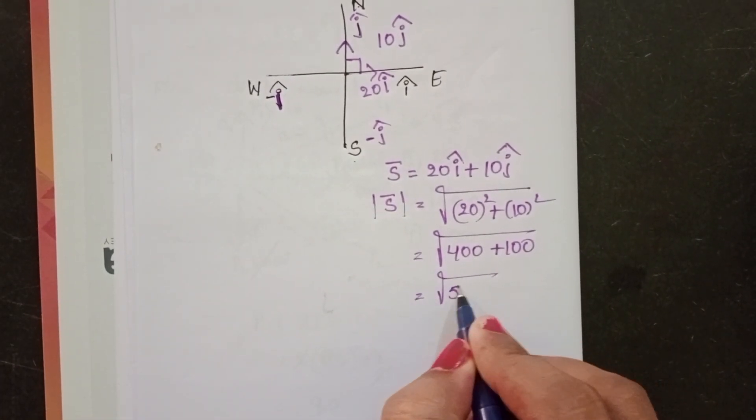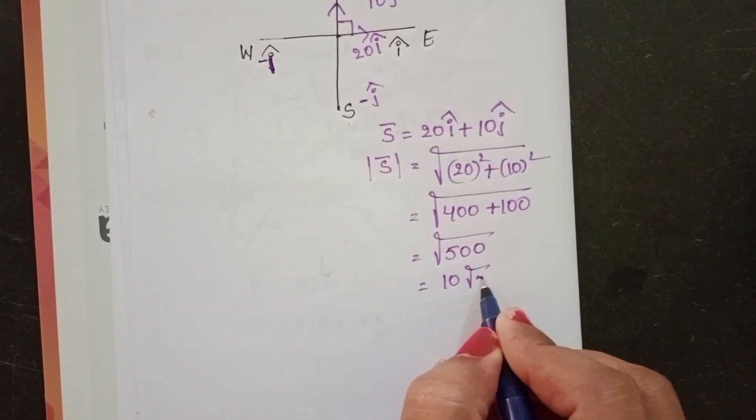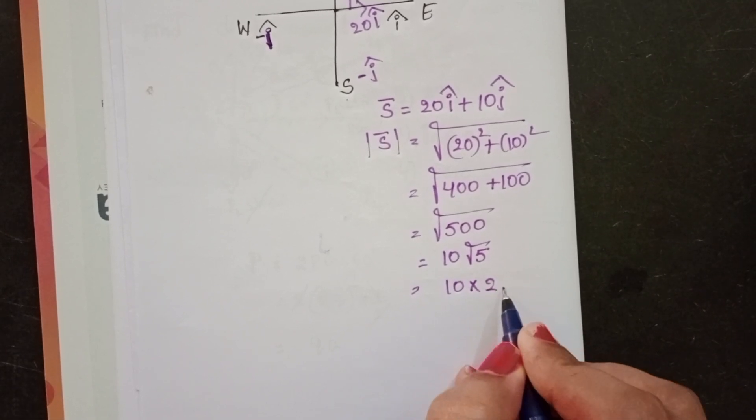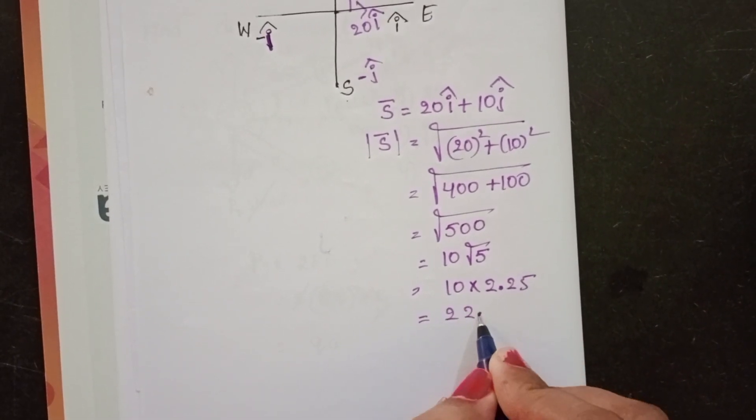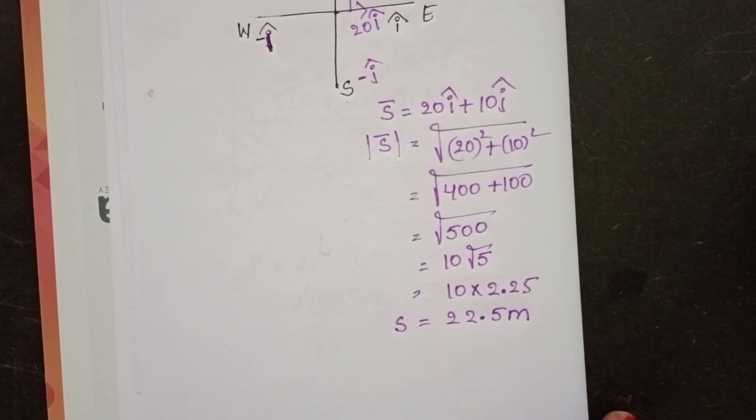Root of 500. Write 10 root 5. Root 5 value 2.25. So 22.5 meters. This is the magnitude of the displacement.